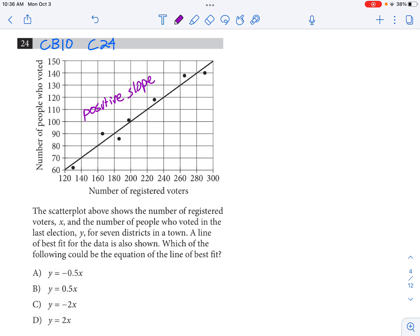So it says the scatterplot above shows the number of registered voters x and the number of people who voted in the last election y for seven districts in town. So basically what we see is we have a positive association between the number of registered voters and the number of people who actually vote.